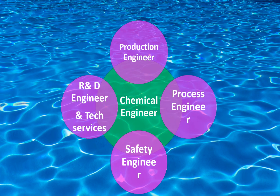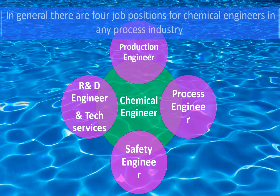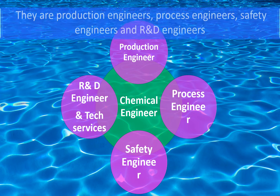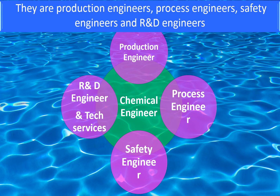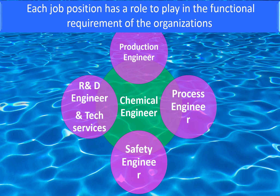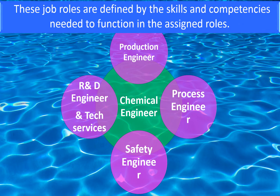In general, there are four job positions for chemical engineers in any process industry: production engineer, process engineer, safety engineer, and R&D engineer. Each job position has a role to play in the functional requirement of the organization. These job roles are defined by the skills and competencies needed to function in the assigned roles.